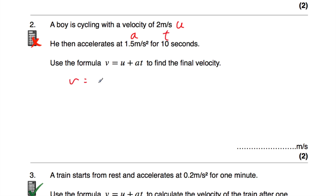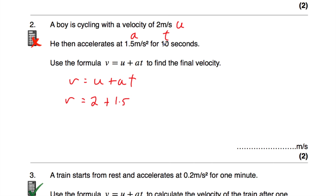So v is equal to u plus at. So v, his final velocity, will be equal to u — his initial velocity — which is 2, plus his acceleration, 1.5, multiplied by t, which is 10. So v is equal to 2 plus 1.5 times 10. 1.5 times 10 would be 15.